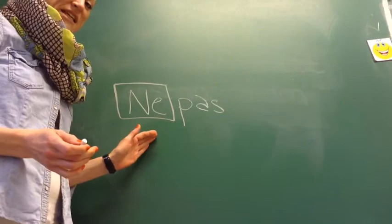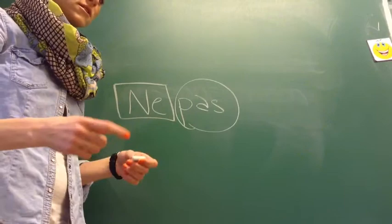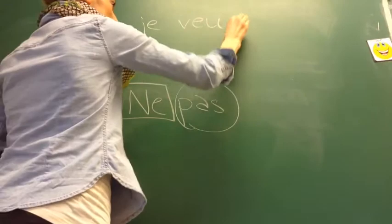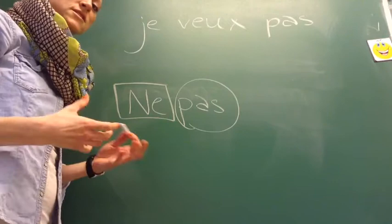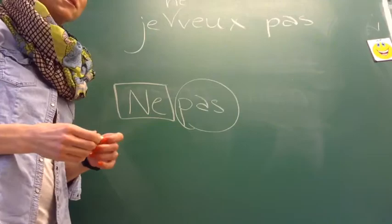Nø er altid med i skriftsprog, men ikke altid i talesprog. Ofte siger man kun den sidste del af nægtelsen, når man taler. For eksempel siger man 'je veux pas' i talesprog, men i skriftsprog skal man have den her nø med. Det behøver man ikke i talesprog.